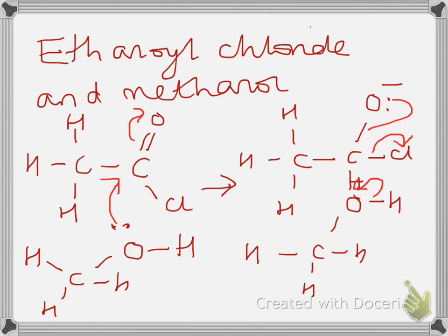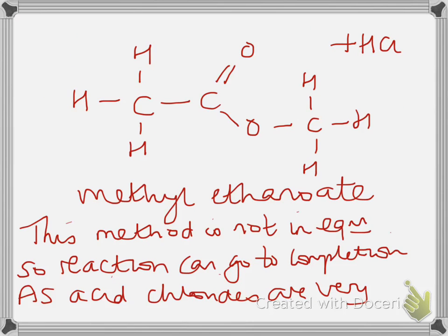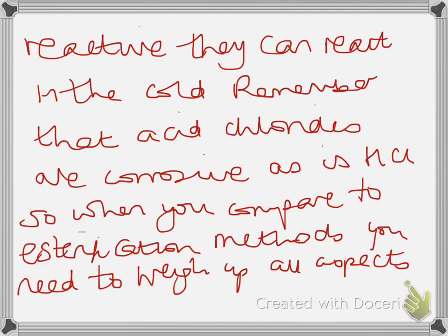If we have a look at ethanoyl chloride with an alcohol, in this case methanol, it's the lone pair on the oxygen that attacks the electron-deficient carbon. Reaction is the same mechanism yet again, but this time we will make an ester. So in this case we've got methyl ethanoate. This method is not actually in equilibrium compared to other ways of making esters, so the reaction can go to completion. As acid chlorides are very reactive, they can react in the cold.